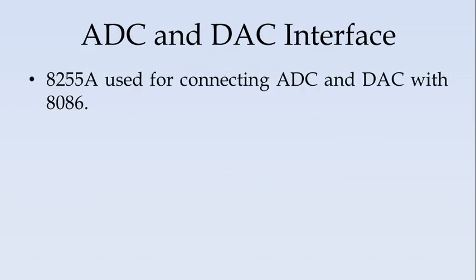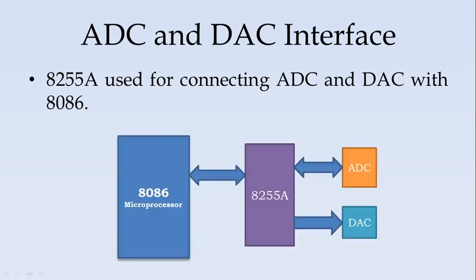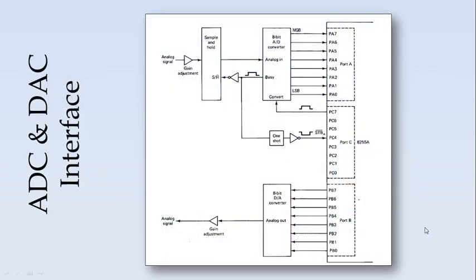For connecting the ADC and DAC, the 8255A Programmable Peripheral Interface is used for connecting with the 8086 processor. 8086 is connected to 8255A, and through the IO pins and handshaking signals, the 8255A interconnects with the ADC and the DAC. So the communication between ADC and DAC to the 8086 is done by means of the 8255A.